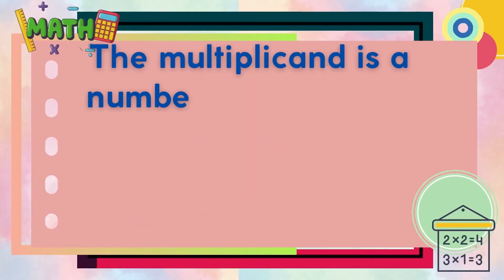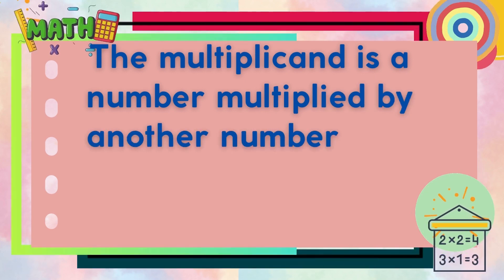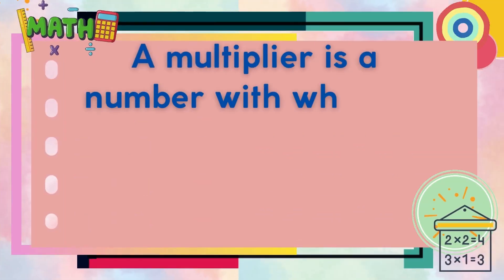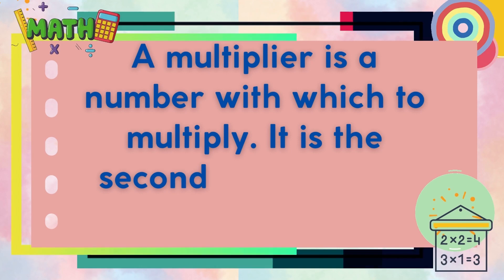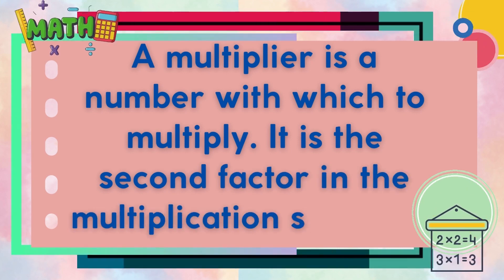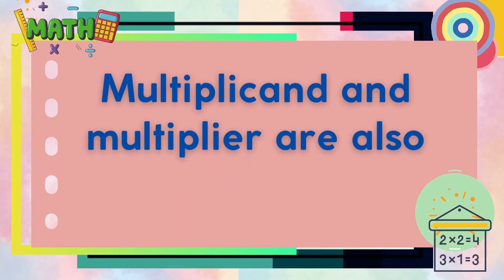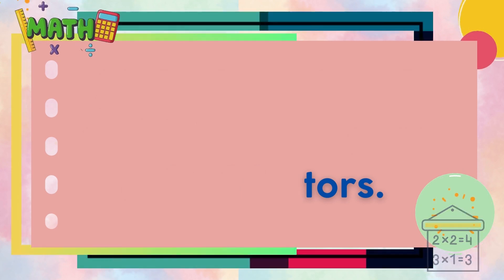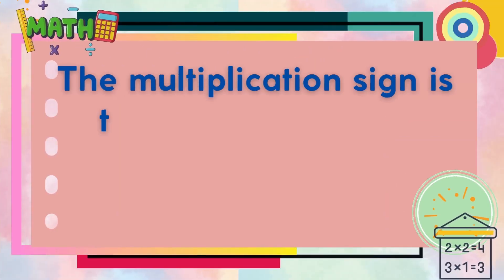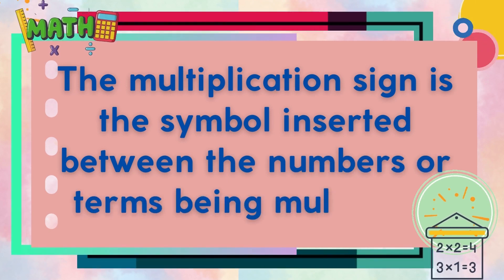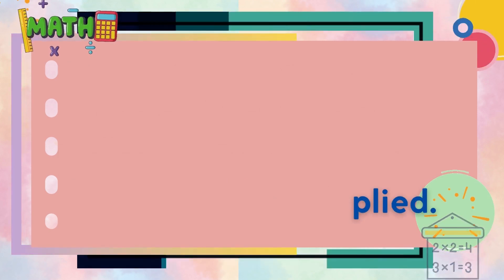The multiplicand is a number multiplied by another number — it is the first factor in the multiplication sentence. The multiplier is the number by which to multiply — it is the second factor in the multiplication sentence. Multiplicand and multiplier are also called factors.